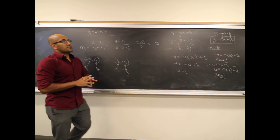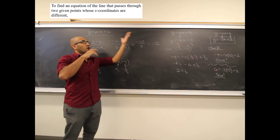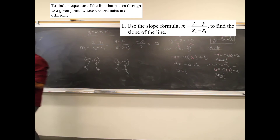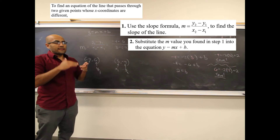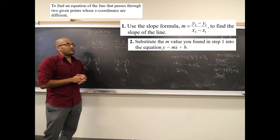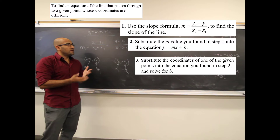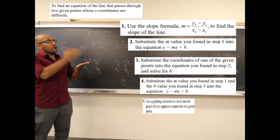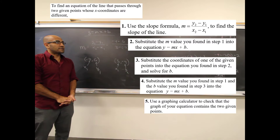The general strategy when given two points: first, use those two points and the slope formula to find the slope. Then pick one of the given points, substitute m into y equals mx plus b, and use that point to solve for b. Finally, substitute m and b back into the equation. You can then graph it or verify by substituting points.